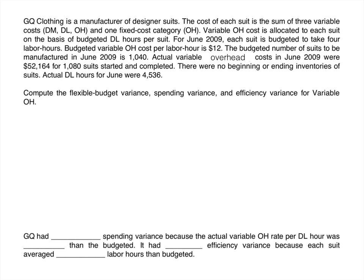Variable overhead cost is allocated to each suit on the basis of direct labor hours per suit. For June 2009, each suit is budgeted to take four labor hours. The budgeted variable overhead cost per labor hour is $12. The budgeted number of suits to be manufactured in June is 1,040. Actual variable overhead costs in June were $52,164 for 1,080 suits started and completed, with no beginning or ending inventories. Actual direct labor hours for June were 4,536. We need to compute the flexible budget variance, the spending variance, and the efficiency variance for variable overhead.